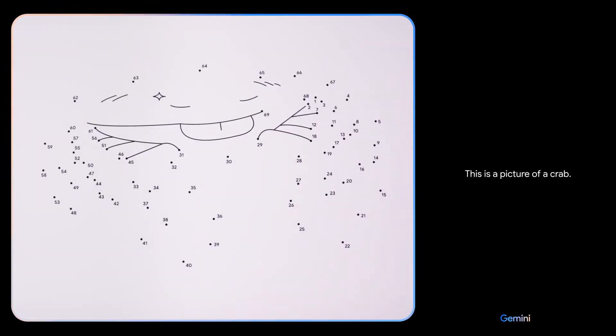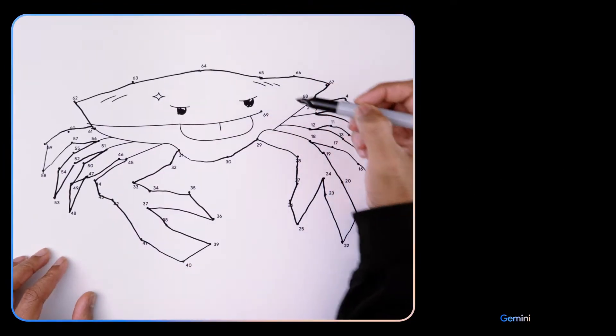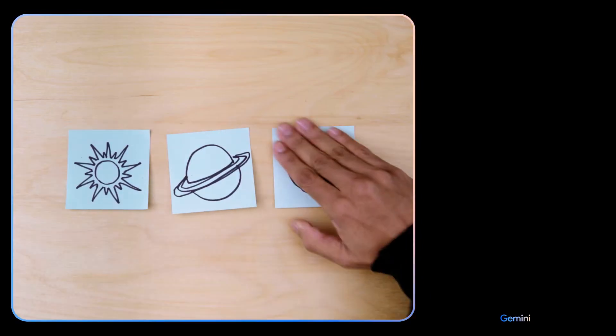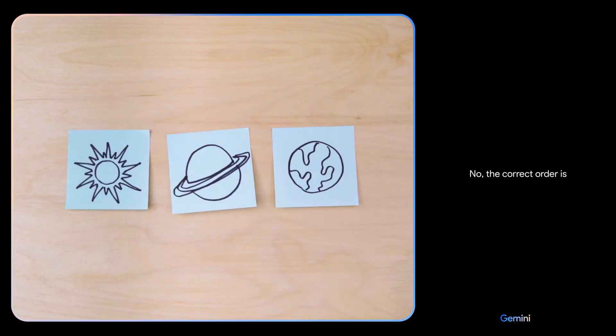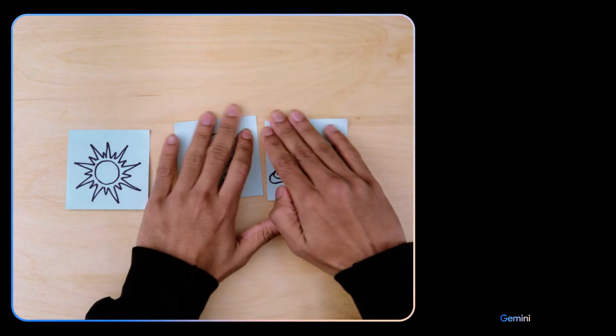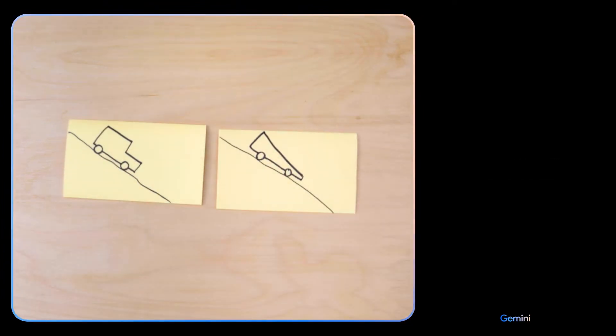This is a picture of a crab. That's right. Is this the right order? No, the correct order is sun, Earth, Saturn. Based on their design which of these would go faster? The car on the right would be faster. It is more aerodynamic.